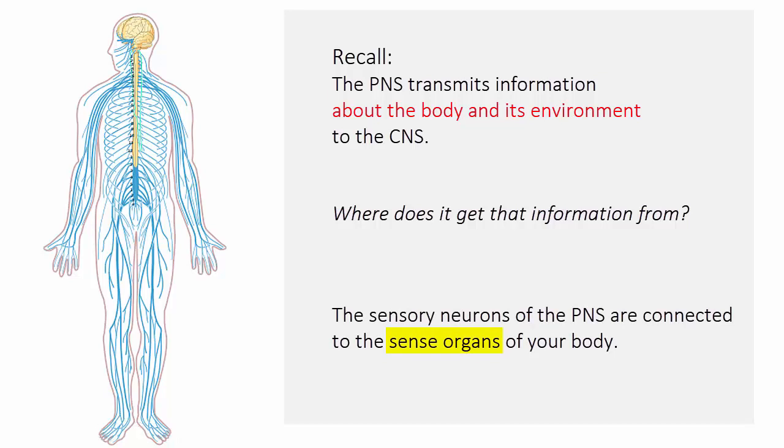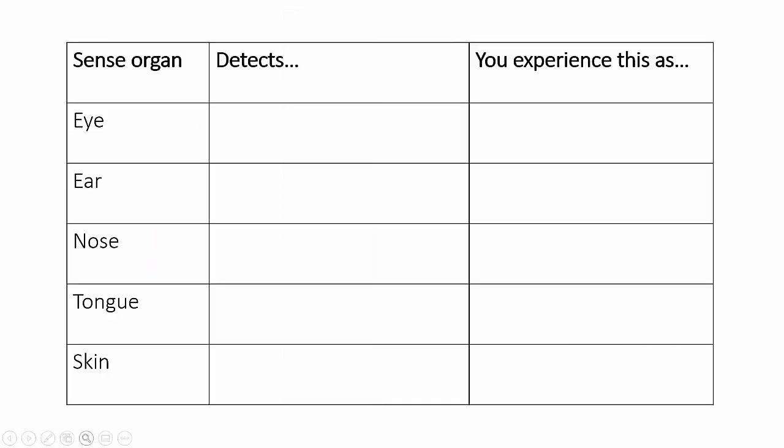These are organs that are specialized to detect something about the outside world and turn it into a nerve signal. The most obvious of these are your eyes, which detect light, your ears, which detect sound, your nose, which detects molecules floating around in the air,